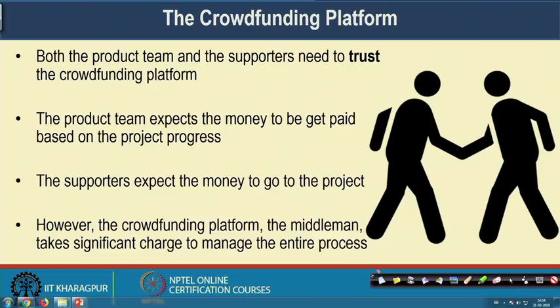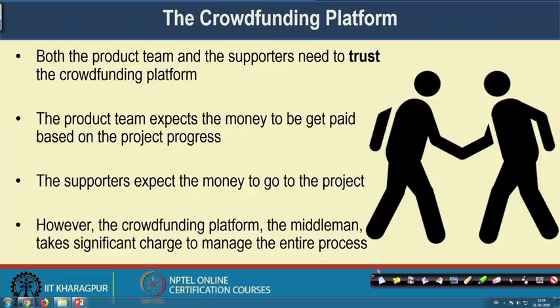The crowdfunding platform — Kickstarter acting as a middleman — takes a significant amount of charges from both the supporters and the product team. A huge amount of money is taken by the middleman, which is a problem with a centralized platform: first you need to trust the platform, and second you have to pay significant charges to the middleman because they are handling the risk factor. The project might not get completed, or supporters may withdraw mid-way, so the middleman like Kickstarter takes significant charges to handle these risks.